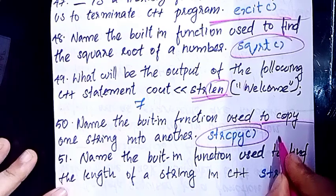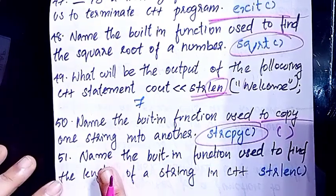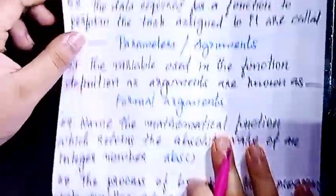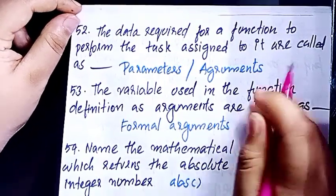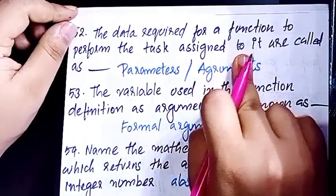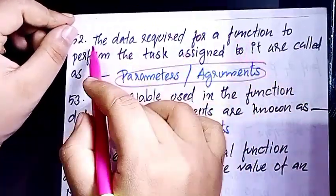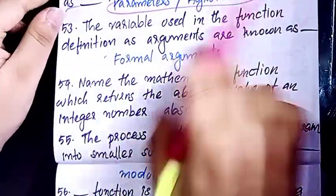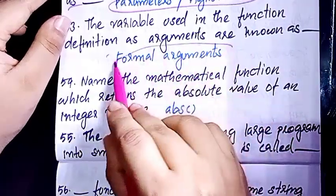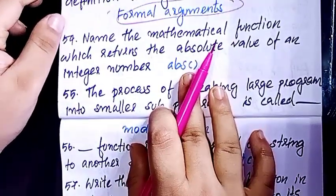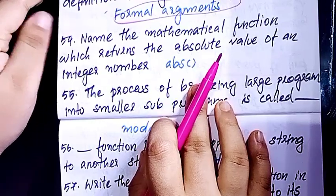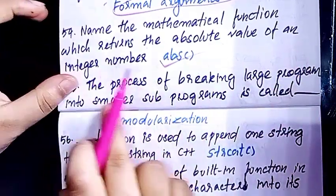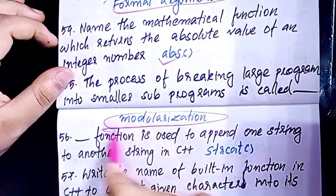The built-in function used to find the length of a string. The data required for a function to perform its task are called parameters or arguments. The variable used in the function definition as an argument is called a formal argument.